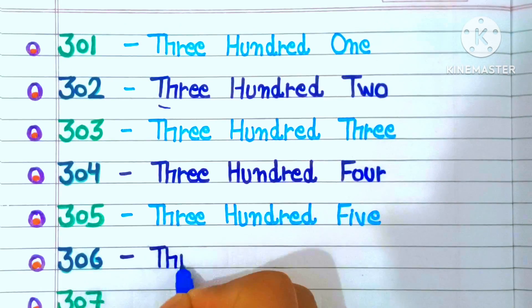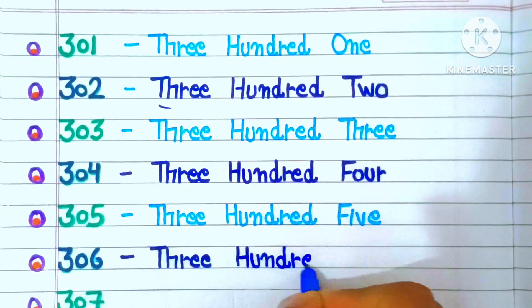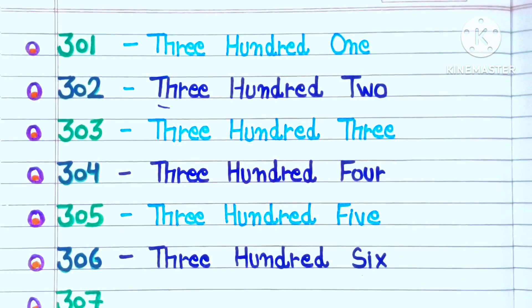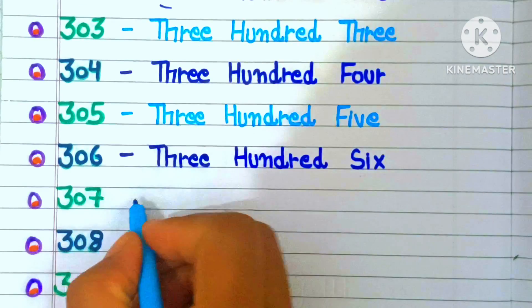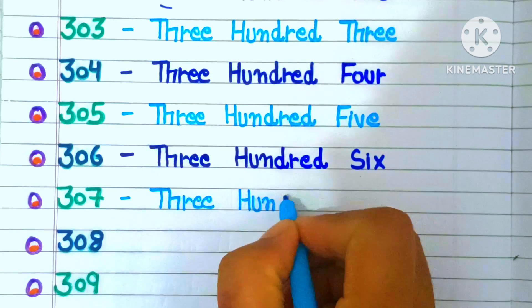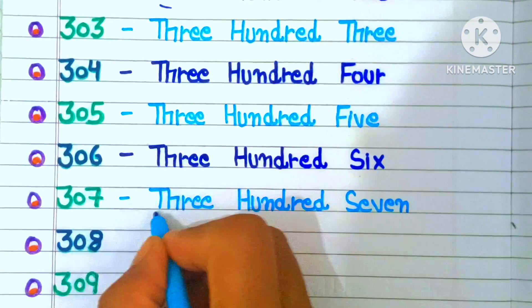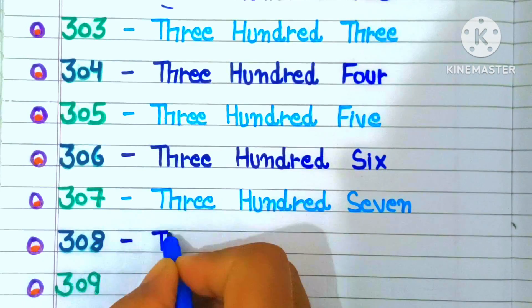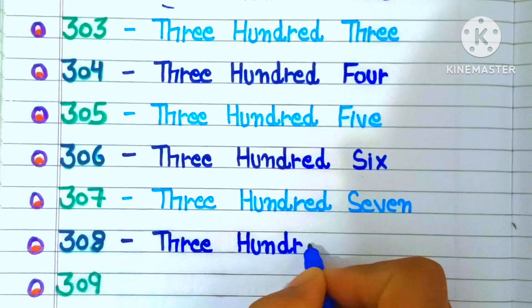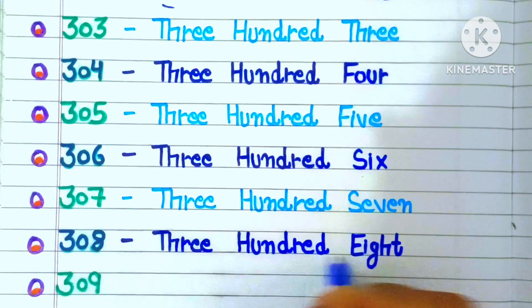306: THREE HUNDRED SIX. 307: THREE HUNDRED SEVEN. 308: THREE HUNDRED EIGHT.